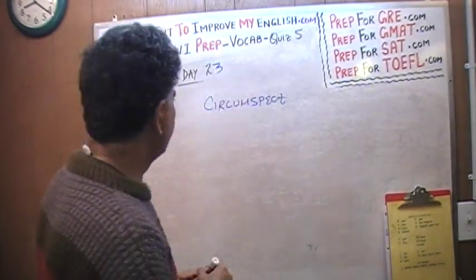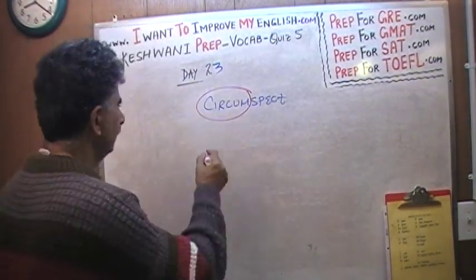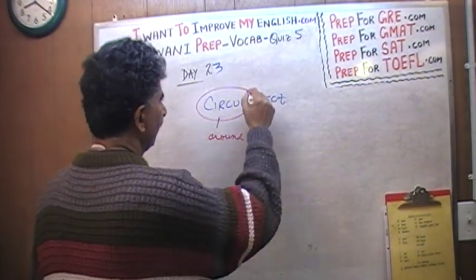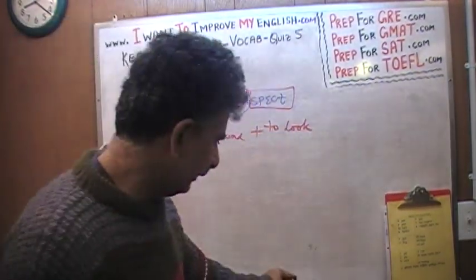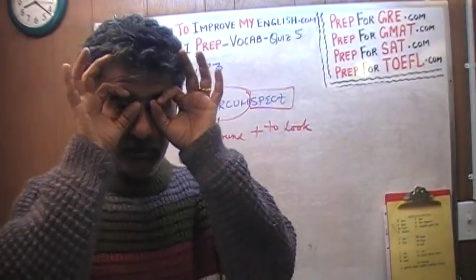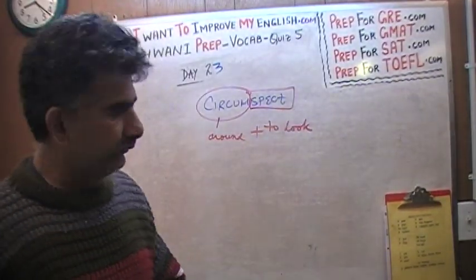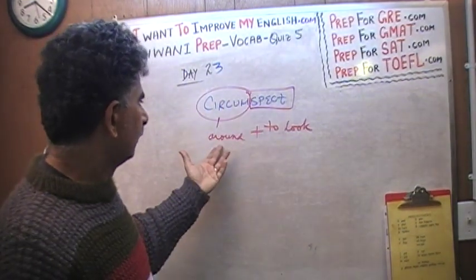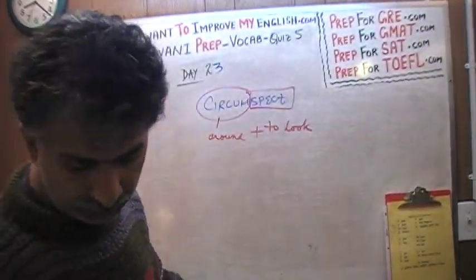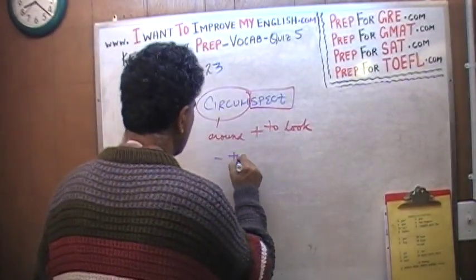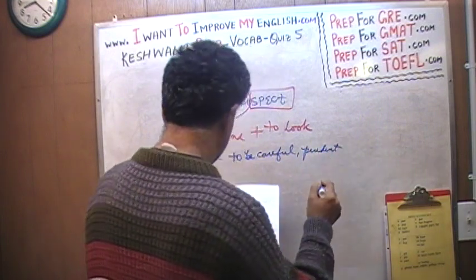Circumspect is made up of two parts. The prefix 'circum' means around, as in circumference — where the word circle and circumference come from. And 'spect' means to look, which is where words like spectators or spectacles come from. Spectacles is just a fancy way of saying eyeglasses. So circumspect literally means to look around — to be careful, to be prudent, to be cautious, to be watchful.